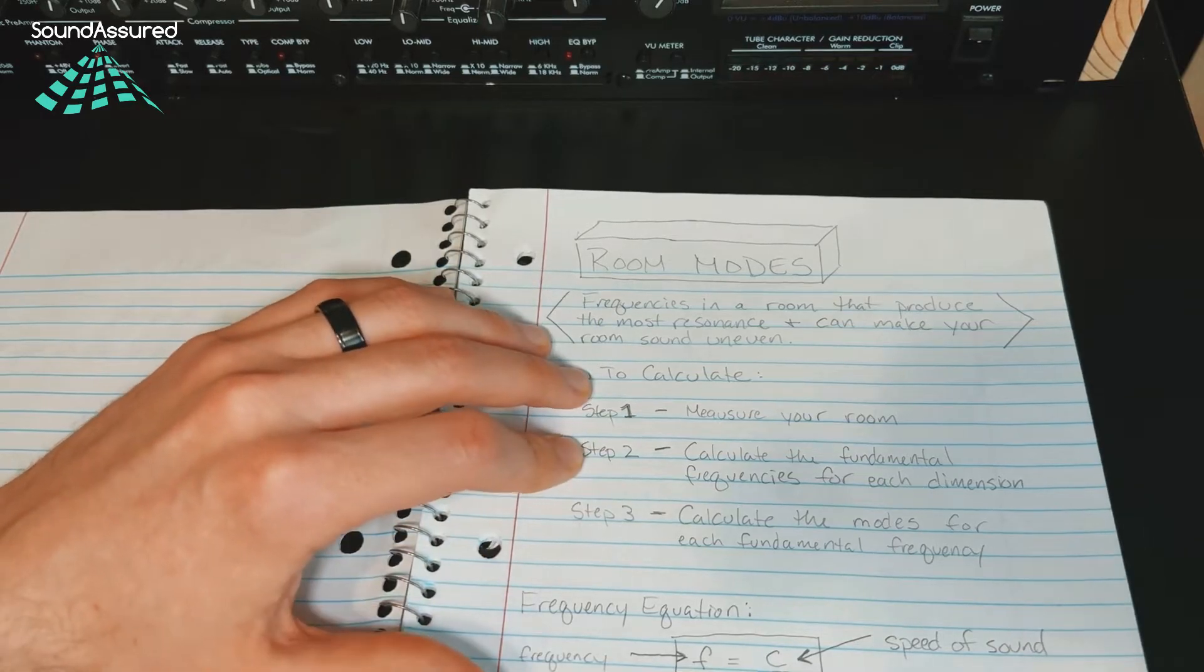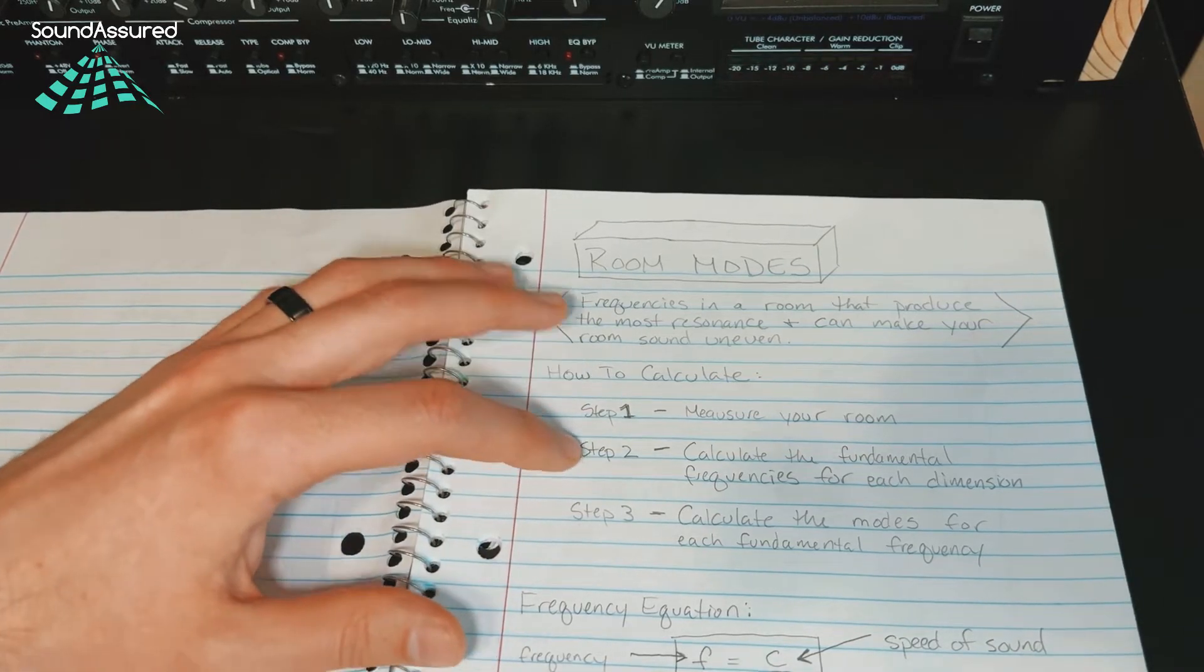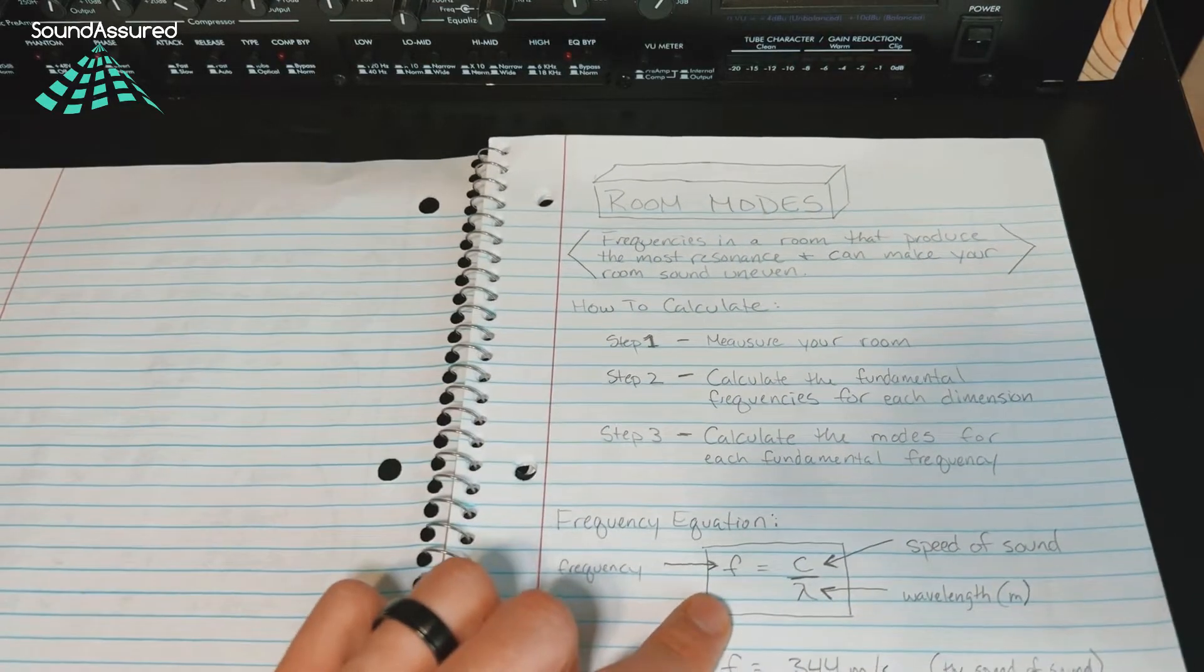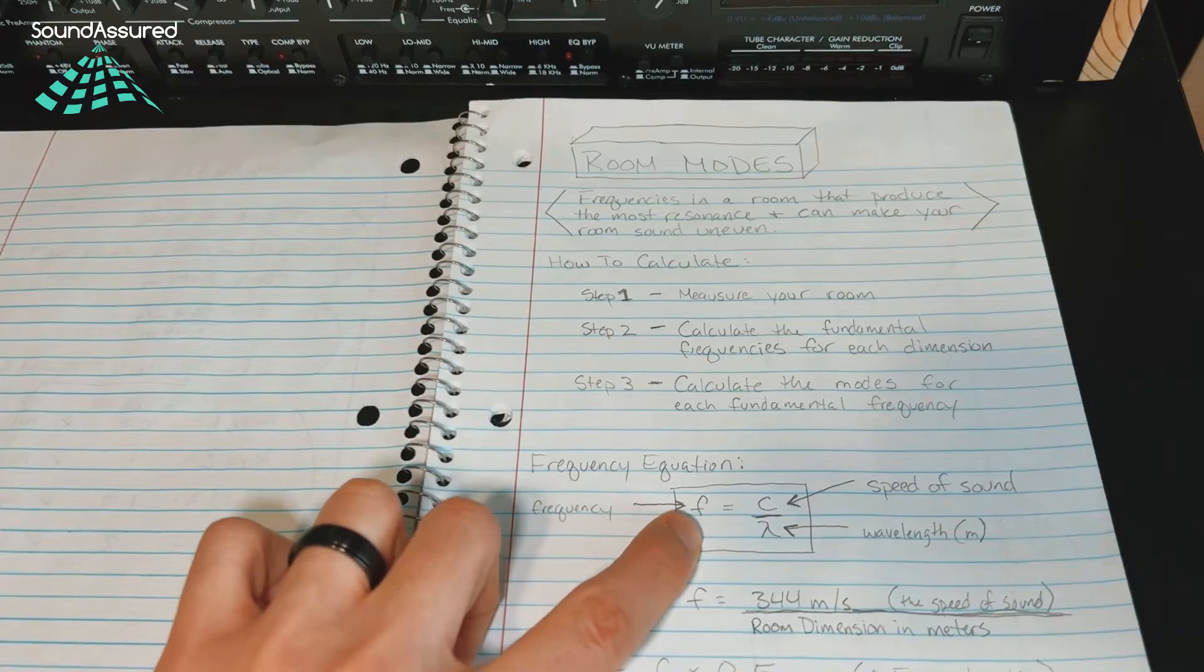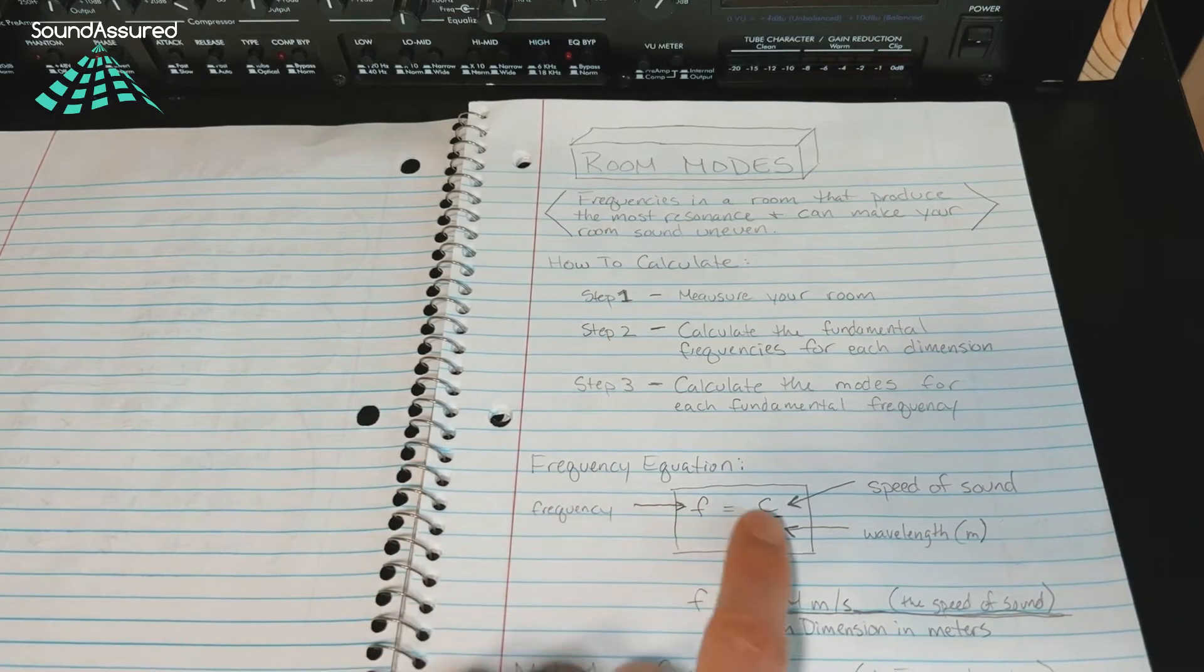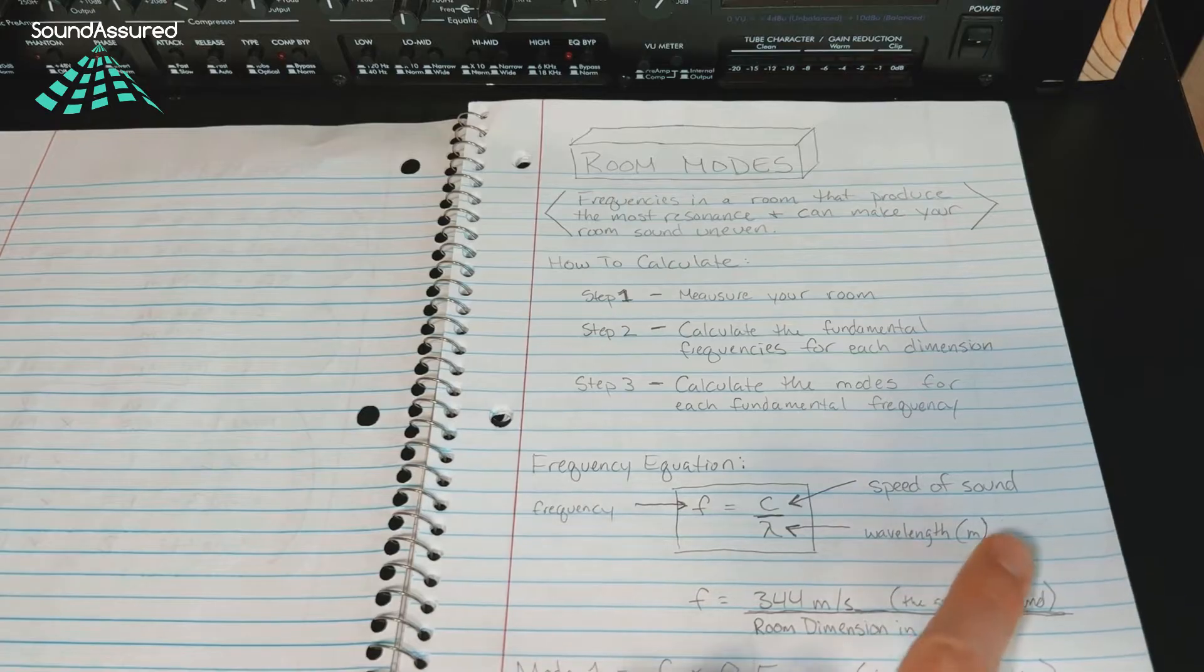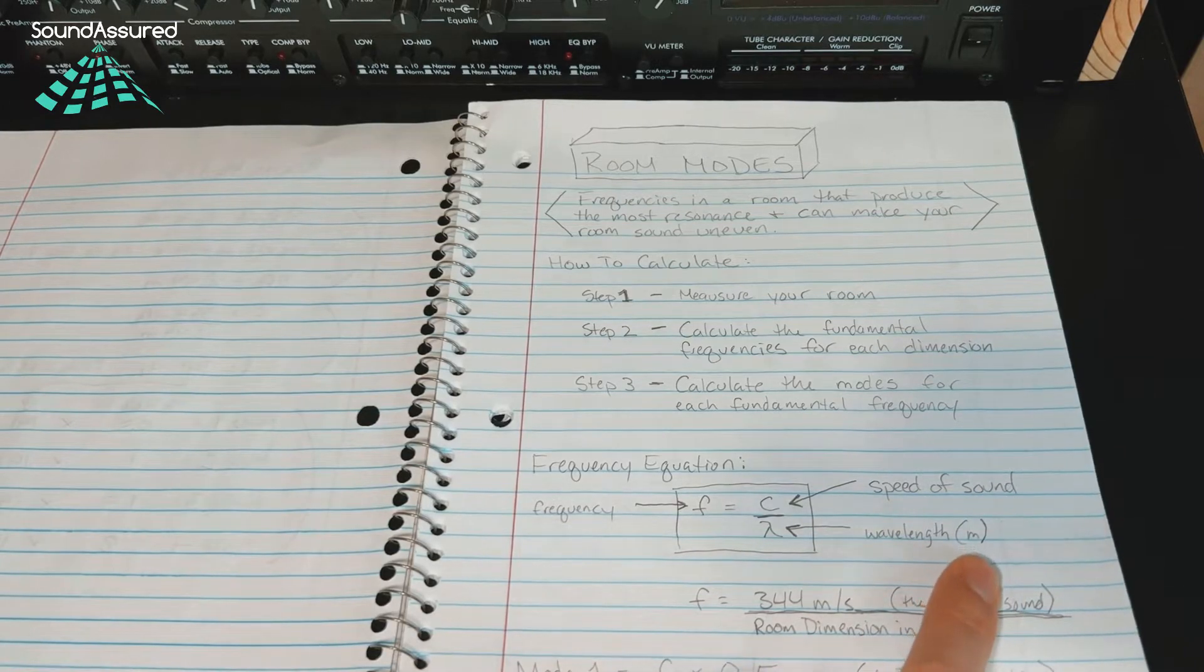Then you're going to calculate the fundamental frequency for each of those dimensions, which down here is the frequency equation. So the fundamental frequency equals the speed of sound divided by the wavelength, which is your measurement in meters, not feet.